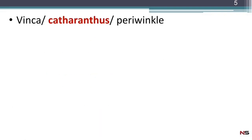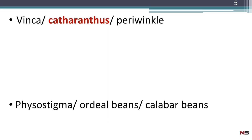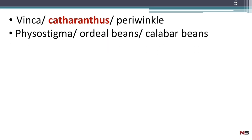The synonym of vinca is Catharanthus or periwinkle — we know that the biological source is Catharanthus roseus, so the synonym is Catharanthus and also periwinkle. Next, physostigma's synonyms are ordeal beans or calabar beans. The alkaloid present is physostigmine, also known as eserine.